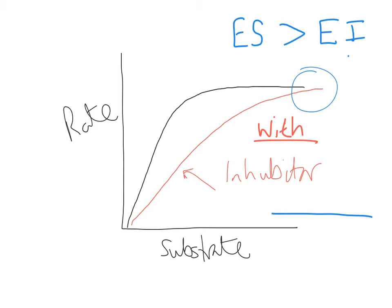The inhibitor can't turn into any product, so it just collides with the active site and bounces back out again — those sites are not permanently occupied by the inhibitor. So if you have more substrate, you can have more enzyme-substrate complexes.